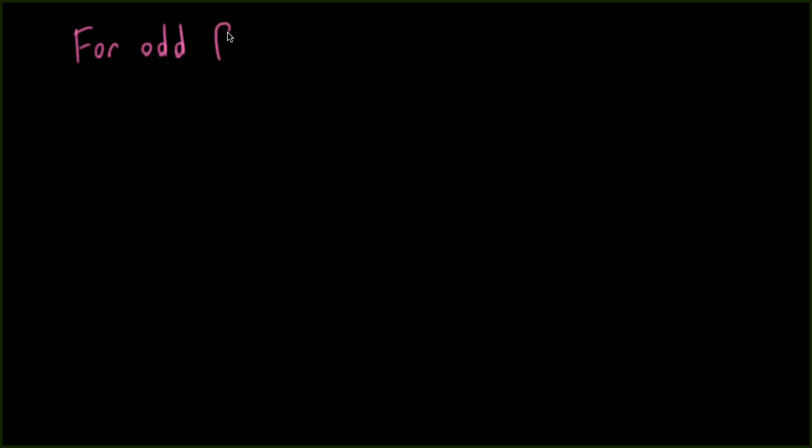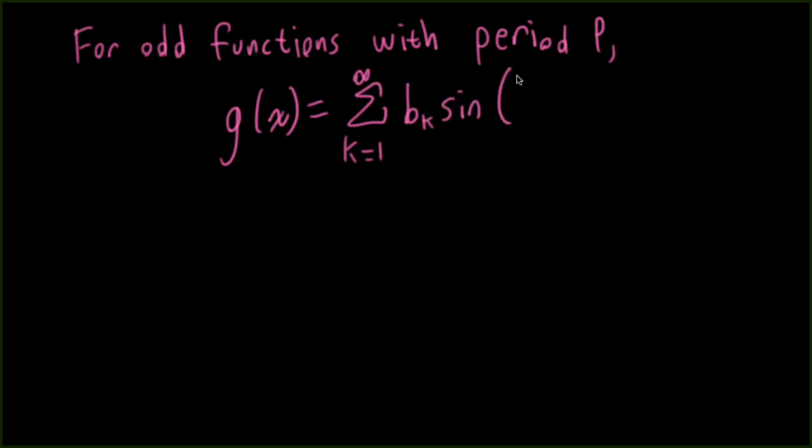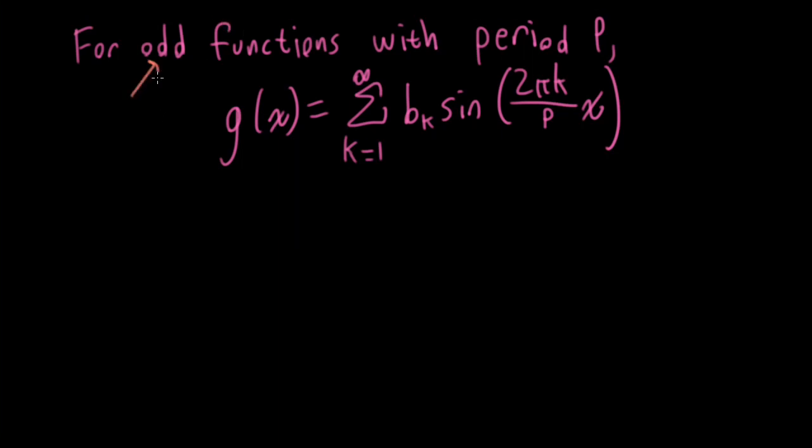So for odd periodic functions with period p, we have a Fourier series representation that looks like this. And conveniently, that's exactly the kind of form that we saw earlier, where G is our initial condition on position. By odd, we mean that G of minus x is equal to minus g of x. So this is a function that's antisymmetric. And by periodic with period p, we mean that g of x is equal to g of x plus p.